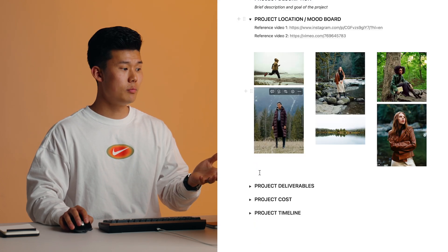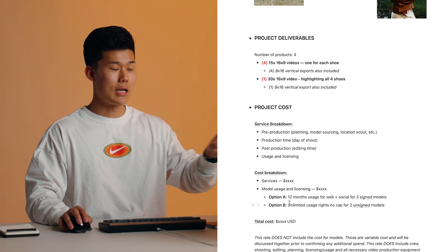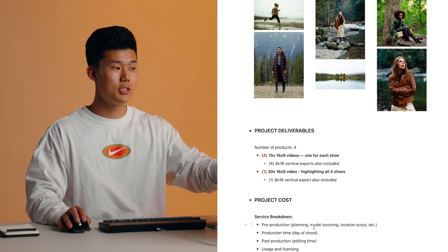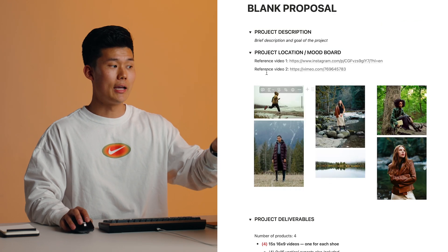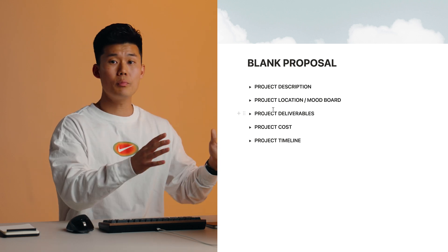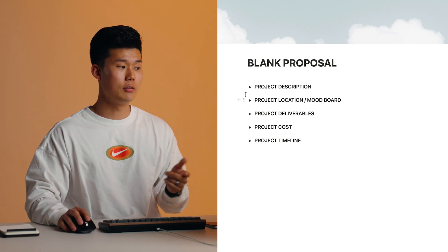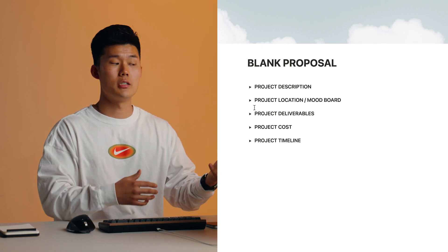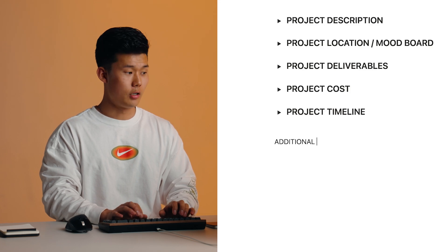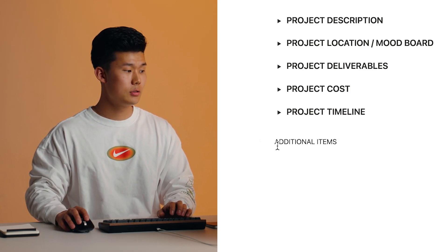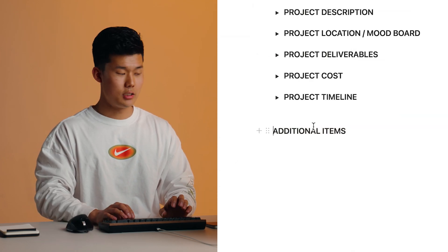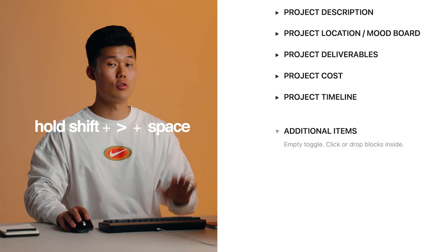project location and mood board, project deliverables, project costs and the breakdown, and even the project timeline, all within Notion. This is obviously an example project, but I created a toggle dropdown menu within the proposal. When I share this with a client, it's super clean and aesthetic, and they're able to go down this toggle list and access all the important information. If you want to add an additional toggle, you add a title, turn it into a heading three, and use shift plus right arrow and space to create a toggle menu.